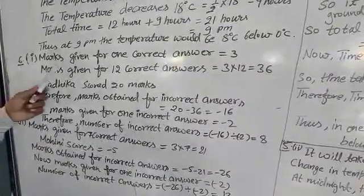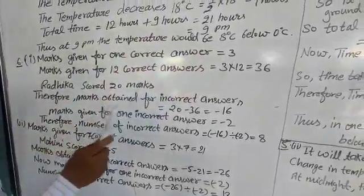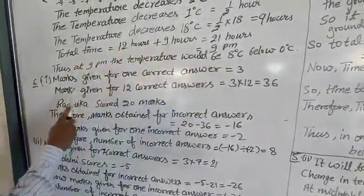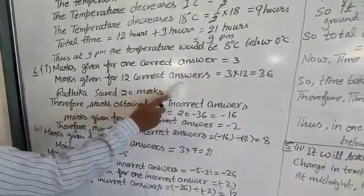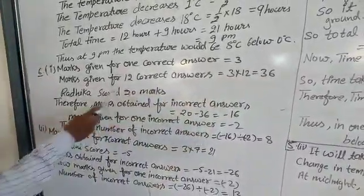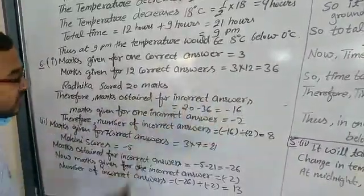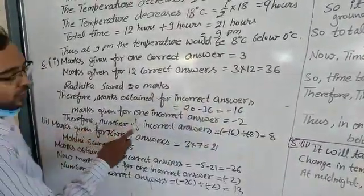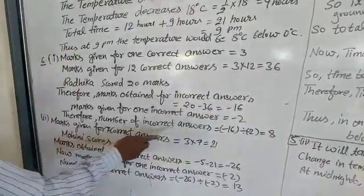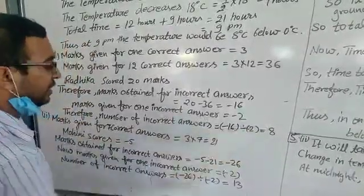Marks given for 1 correct answer is 3. Marks given for 12 correct answers: 3 multiplied by 12 equals 36. Radhika scored 23 marks, therefore marks obtained for incorrect answers: 23 minus 36 equals minus 13. Wait — marks for incorrect answers: minus 16 divided by minus 2 equals 8. So 8 is the number of incorrect answers.